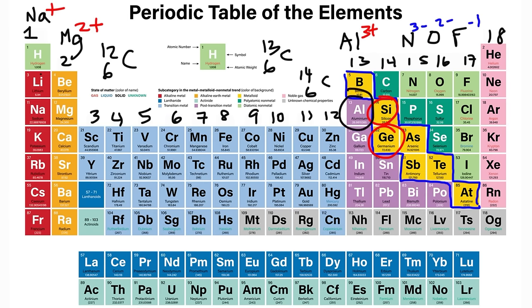Al is aluminum — think of aluminum foil. Gallium is a metal that can actually melt in your hand. Mercury is already a liquid at room temperature — think of liquid metal.